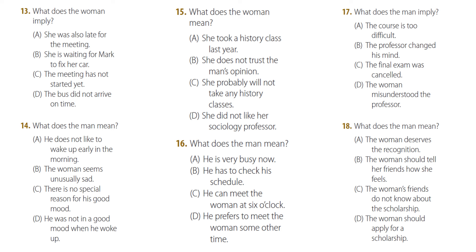Number seventeen. 'Can you believe it? A twenty-page term paper and a final exam. What does Professor Johnson think? That we don't have any classes but his?' 'Wait a second. I'm sure he said it was either one or the other.' What does the man imply?